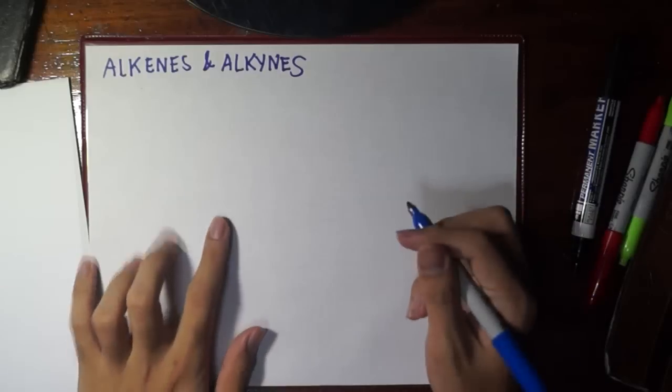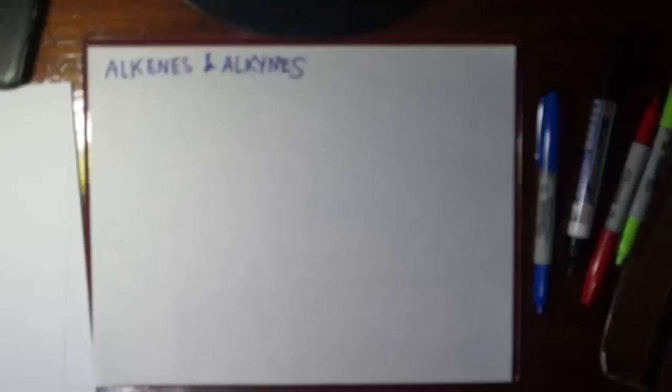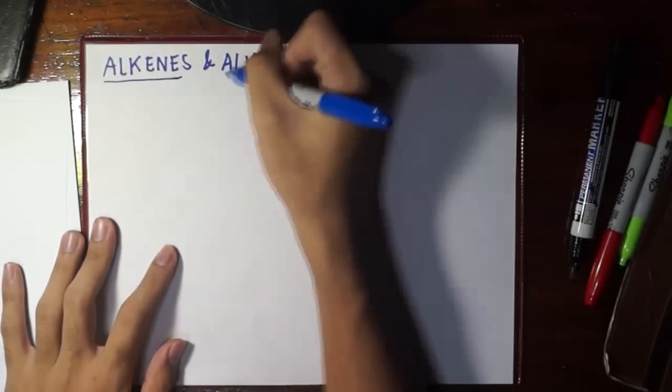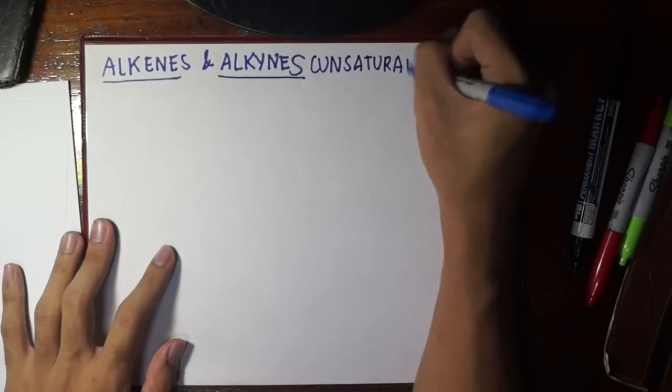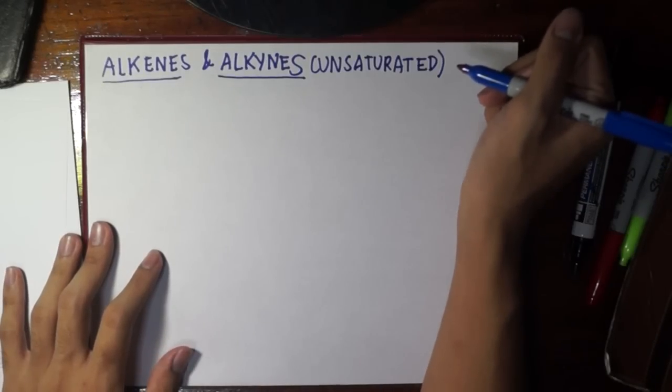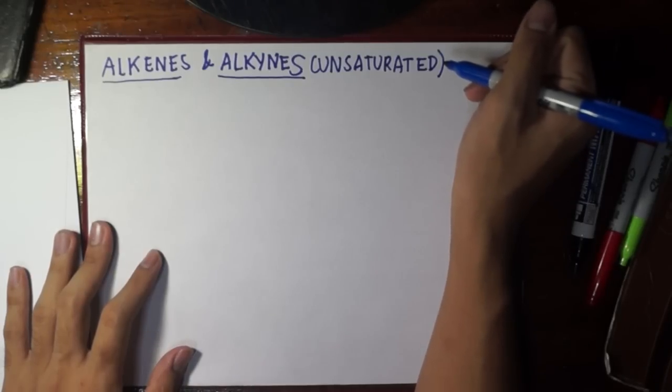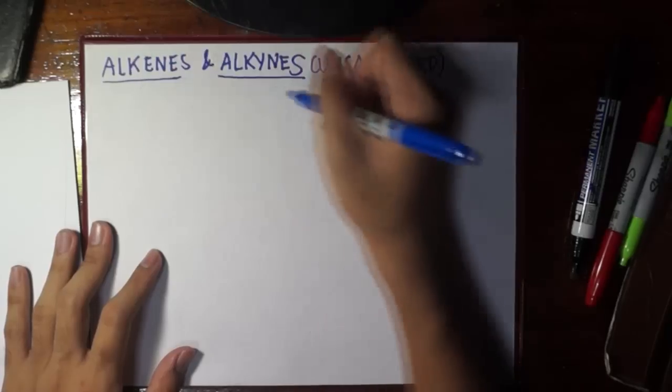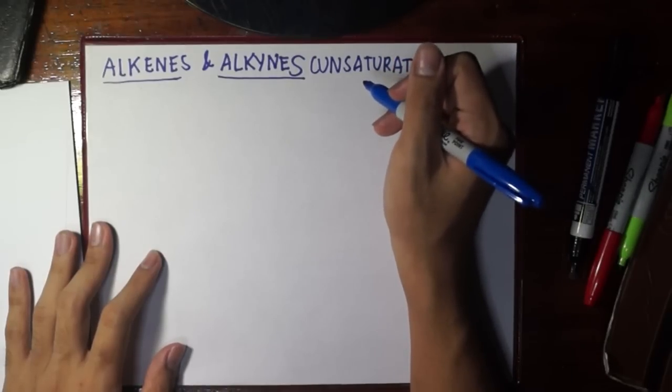In this video we'll be talking about alkenes and alkynes. Previously you should have already watched the review on alkenes. Both of these can be called unsaturated hydrocarbons, although there is another class of unsaturated hydrocarbons known as aromatic hydrocarbons, which we will talk about later.